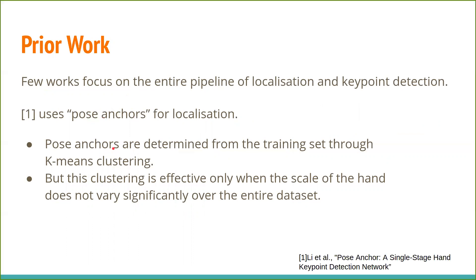These pose anchors are determined from the training set through k-means clustering. However, this clustering has a constraint: it is effective only when the scale of the hand does not vary significantly over the entire dataset. The same hand pose observed across different scales will not be placed in the same cluster. Hence, this method requires that the hand pose remains constant in scale throughout the dataset.